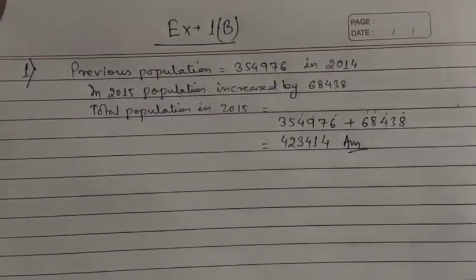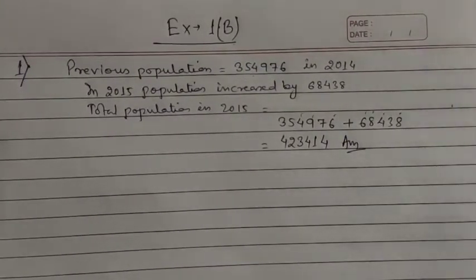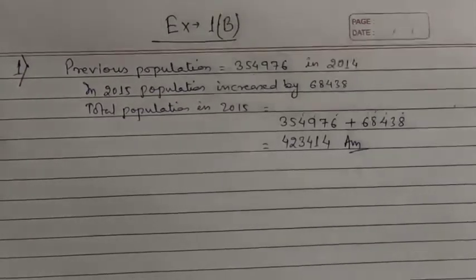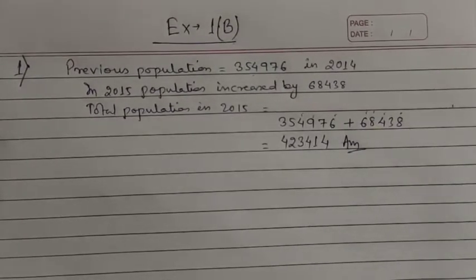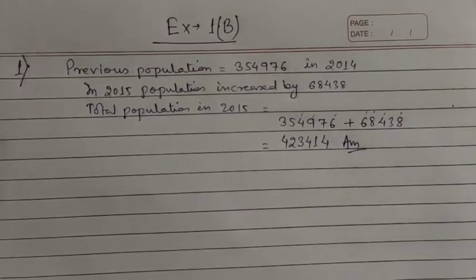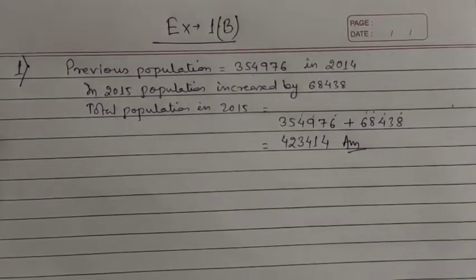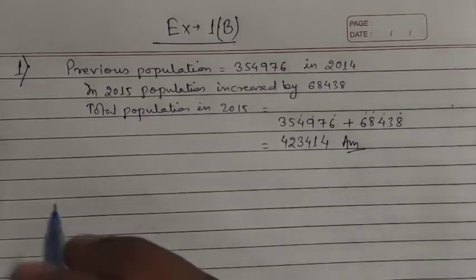Question 2: A is equal to 7,43,000 and B is equal to 8,00,100. The question asks which is greater and by how much. We compare the numbers first to find which is greater, then subtract the smaller from the greater. You have to solve this by your own.